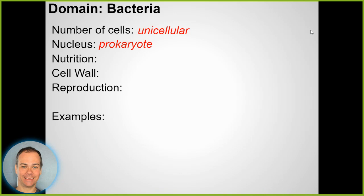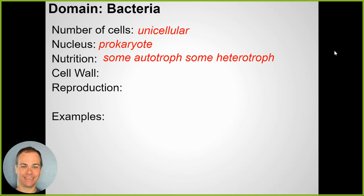Bacteria are pretty familiar - they are single-celled, unicellular living organisms. Some groups evolved so their genetic material, their DNA, is surrounded by a nuclear membrane and enclosed. Other organisms don't have that nuclear membrane - their DNA is just floating around in their cells. Bacteria are prokaryotes - their DNA is just floating in the cytoplasm. 'Pro' means before; these evolved before a nucleus evolved.